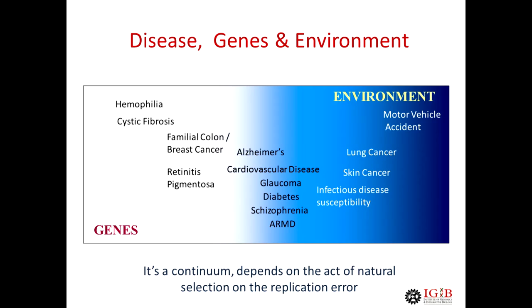It is as if gene and environment are part of a continuum, and for every phenotype both contribute. Classical Mendelian diseases are mostly contributed by genetic factors with less environmental influence, whereas the more complex diseases are more environmental than genetic. Glaucoma sits in the middle where both genes and environment play an important role, and that's what makes it much more complex to deal with.